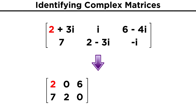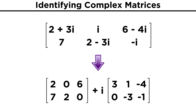Continuing in this manner will give us two, zero, six, seven, two, zero. Then we do this again for the imaginary part of each element, so this time we take the three I from two plus three I. That will give us I times the matrix of three, one, negative four, zero, negative three, negative one. We could distribute the I and add the two matrices together to get what we started with.